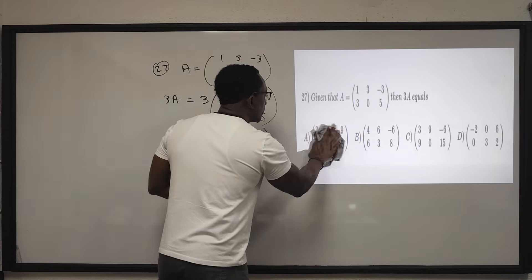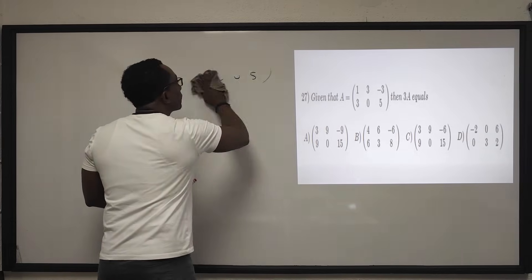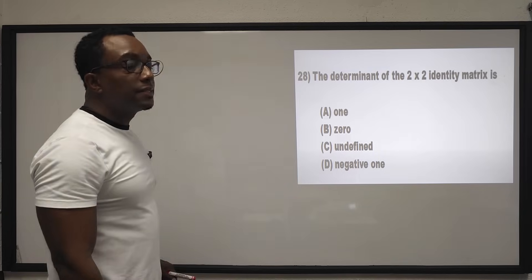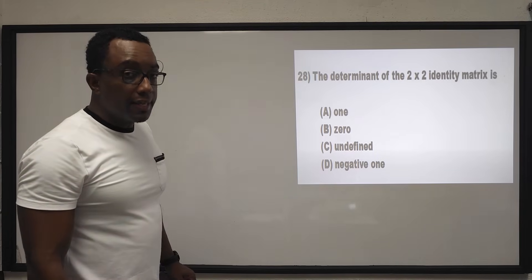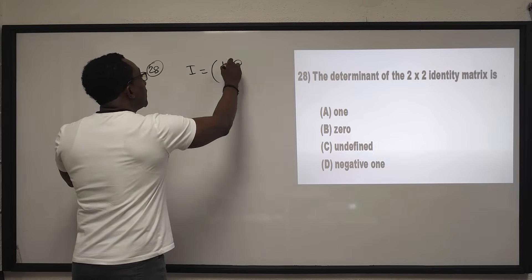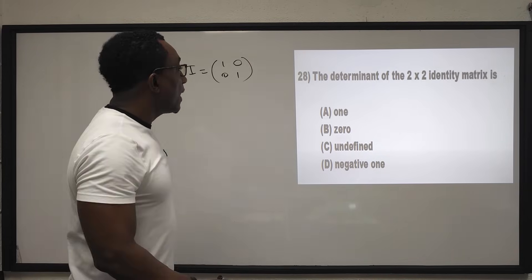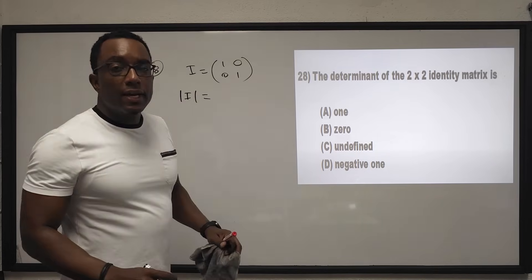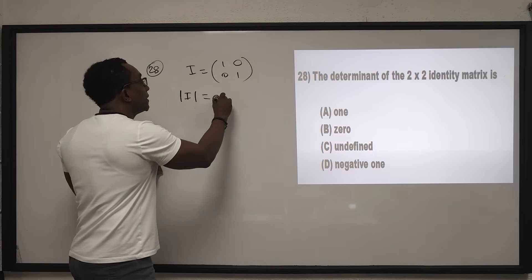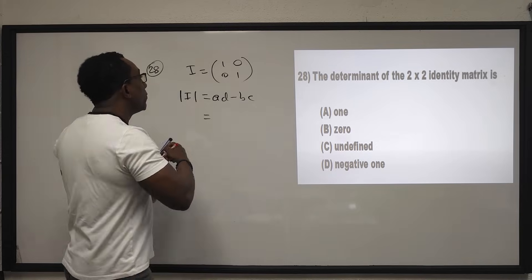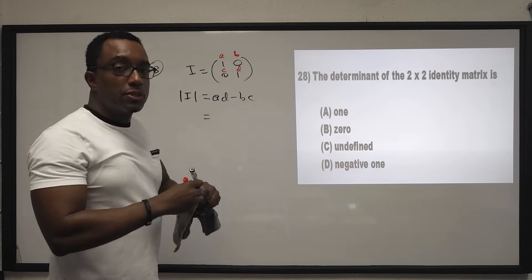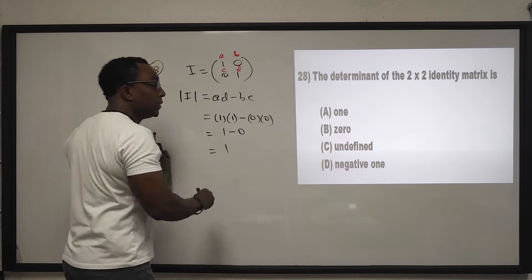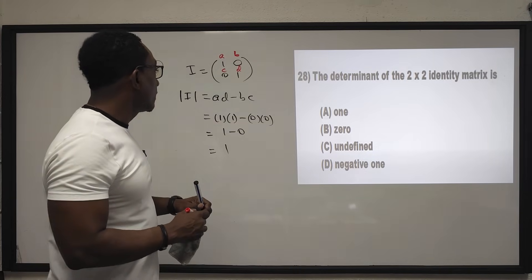Question 28: the determinant of the 2 by 2 identity matrix. The identity matrix is 1 0 over 0 1. The determinant formula is AD minus BC: 1 times 1 minus 0 times 0 equals 1. The answer is E.